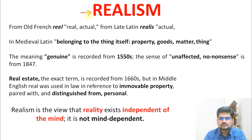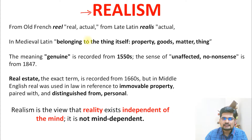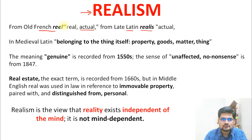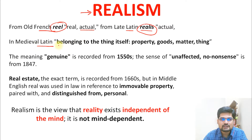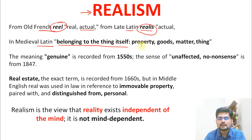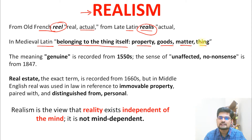So let's learn about this word called realism. This 'ism' is about a word coming from old French or Latin which basically means 'actual.' The word 'real' or 'realis' is the main root from which it has been taken into English, and further in medieval Latin it is elaborated as 'belonging to the thing itself' — belonging to properties, goods, matter, and things. This is the basic idea behind the word realism.